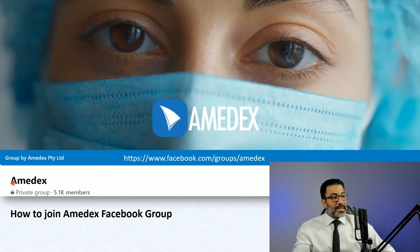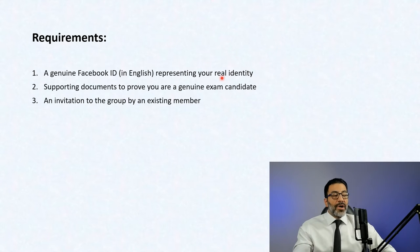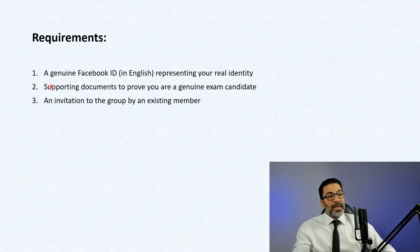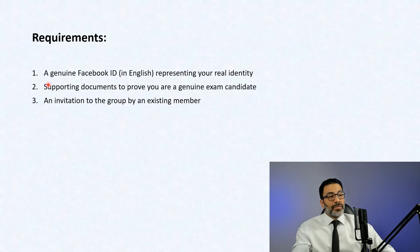So let's talk about what you need in order to get in — three things. First, we need a genuine Facebook ID. Your Facebook ID must be in English and genuine, and it should represent your real identity. Second, you need a supporting document that proves you're a genuine exam candidate — you want to be in the group just for the purpose of exam preparation, nothing else. Third, you're going to need an invitation to the group by an existing member, because the group is private.